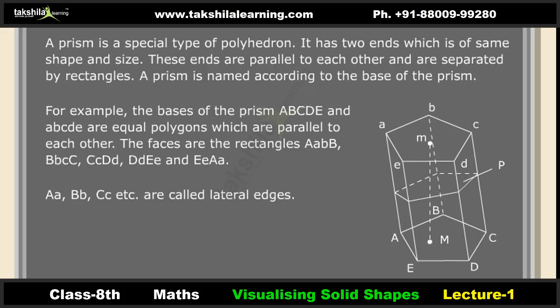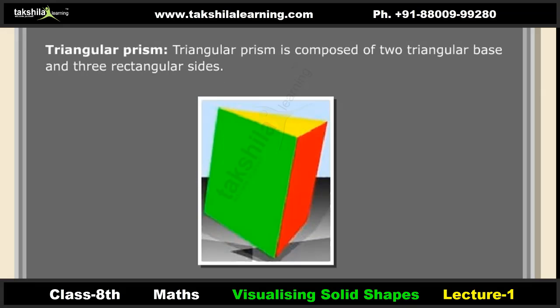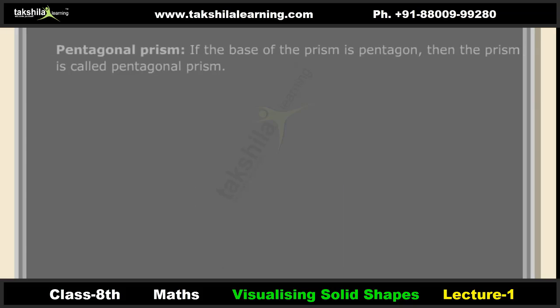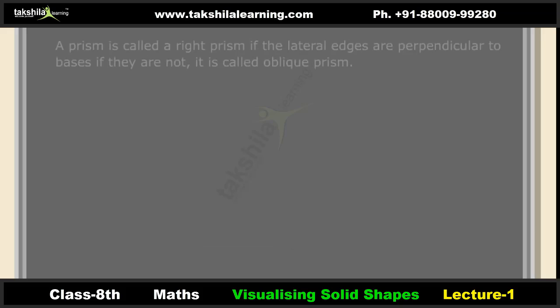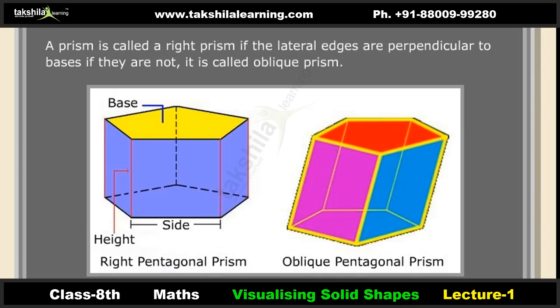The lateral edges of a prism are called lateral edges. Prisms are classified according to their bases. A triangular prism is composed of two triangular bases and three rectangular sides. If the base of the prism is a pentagon, the prism is called a pentagonal prism. A prism is called a right prism if the lateral edges are perpendicular to the bases; if they are not, it is called an oblique prism.